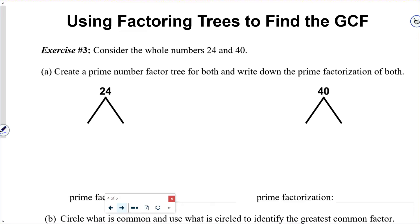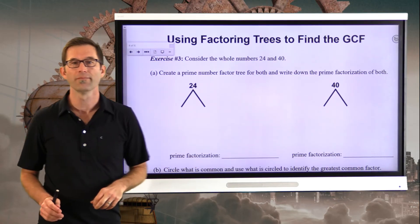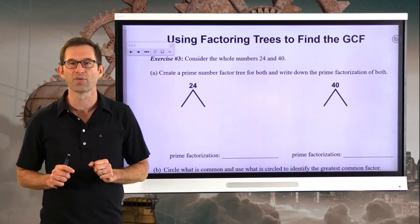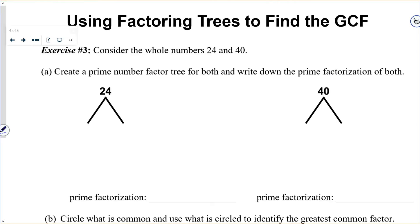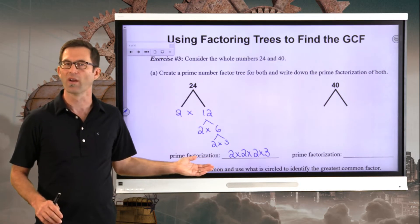Exercise number 3. Consider the whole numbers 24 and 40. Create a prime number factor tree for both and write down the prime factorization of both. Now, let's go through the factor tree. 24 can be factored as 2 times 12, then 12 as 2 times 6, and 6 as 2 times 3. So the prime factorization of 24 is 2 times 2 times 2 times 3.